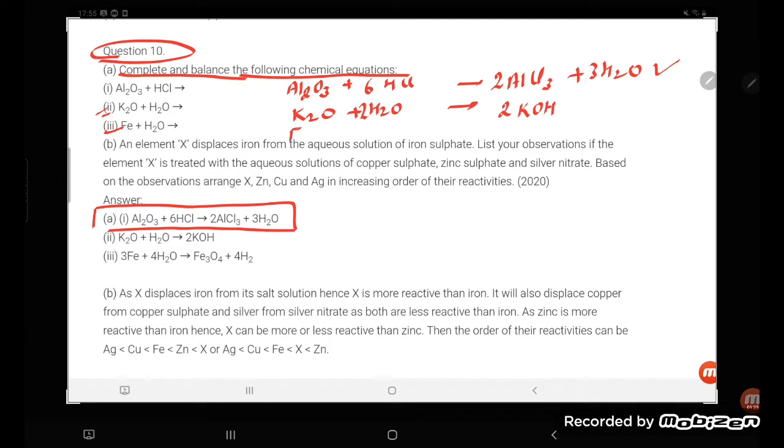The third one: Fe plus H2O. Fe plus H2O, right, and how many H2O you need? Student, 4 H2O, and here you take 3 Fe, so it will give Fe3O4, Fe3O4, plus it will give 4 H2 gas. So this is the balanced equation, student.